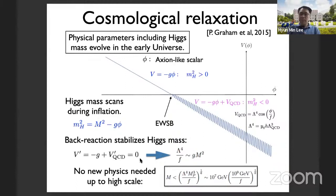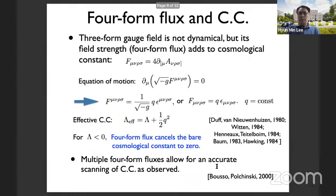The bottom line is that there is no new physics needed up to the high scale, and optimally the new physics scale is about 10^7 GeV or so.